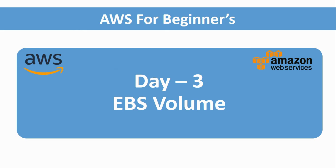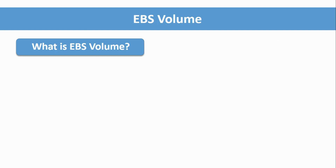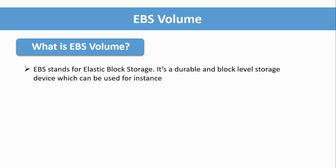Hello everyone, welcome back to the channel. Today, as part of the AWS for Beginners playlist, Day 3, we will see EBS volume. EBS volume is basically the storage device — similar to what we normally call a hard drive in the traditional way. In AWS, it's called an EBS volume. EBS stands for Elastic Block Storage, which is a durable and block-level storage device.